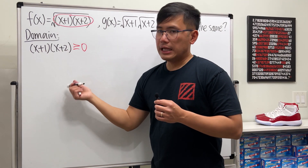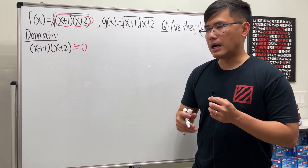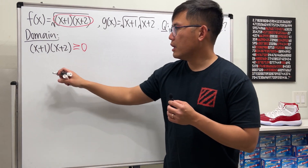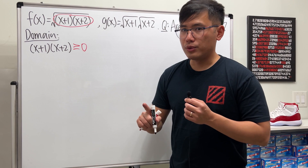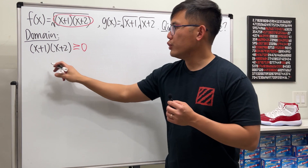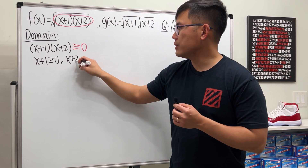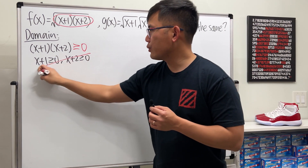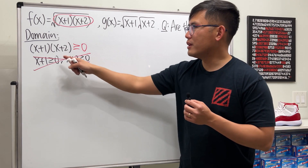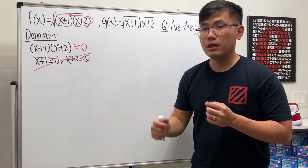We can identify the cut numbers — some books call them cut points — which are the zeros of the expression. Here's one thing you do not want to do: when you have two factors multiplying with an inequality, do not just say x+1 ≥ 0 and x+2 ≥ 0 separately. You cannot do that here. We only have one inequality and it is a non-linear inequality.